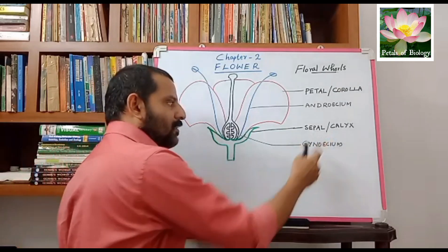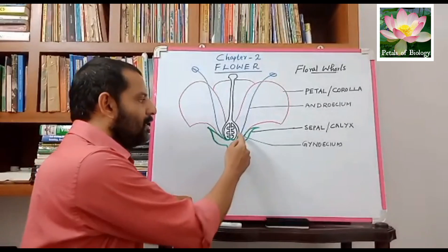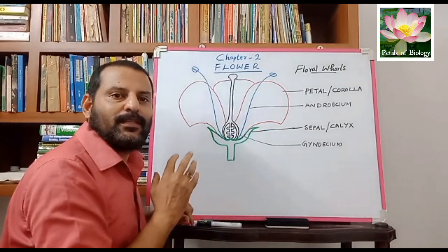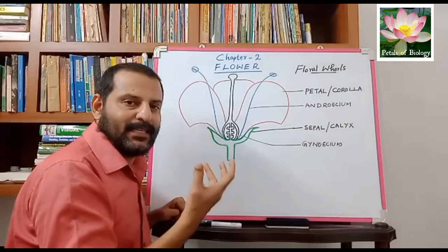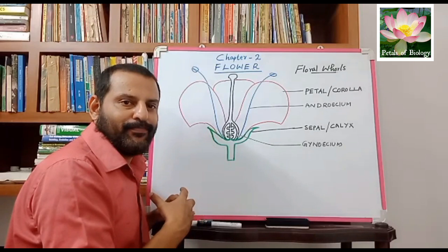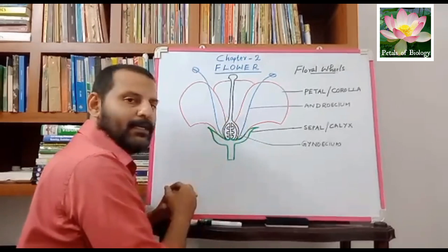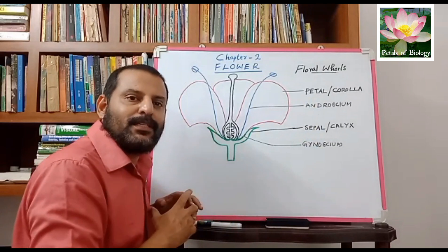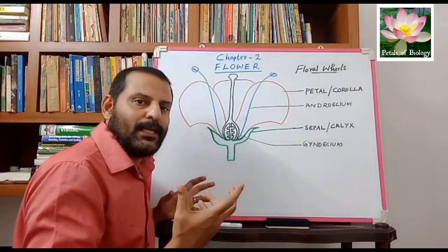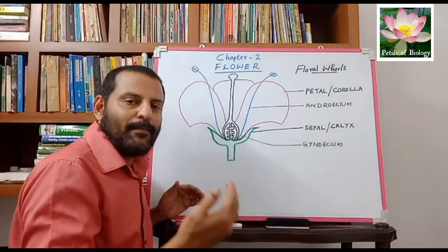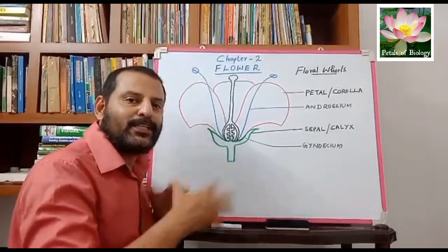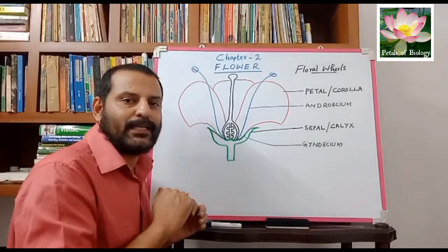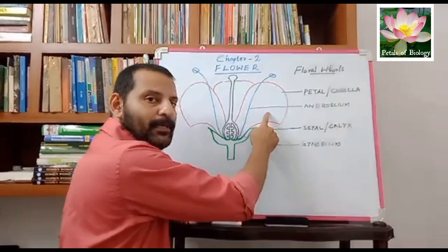The next part of the flower is the petal — this colorful part. The petal helps the plant attract insects for pollination. A flower may have numerous petals. Sometimes the petals are free and you can count or separate them easily, but sometimes the petals are united together to form a common structure.